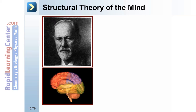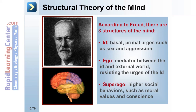Much of psychology is based in the structural theory of the mind, as first described by Freud. According to Freud, there are three structures of the mind. The first is the id, which comprises the basal, primal urges such as sex and aggression — think of the id as the instincts of what I want. The second structure is the ego, which is the mediator between the id and the external world, resisting the urges of the id. The third is the superego, which comprises higher social behaviors such as moral values and conscience.